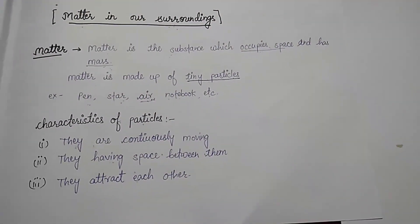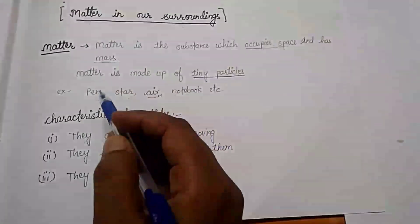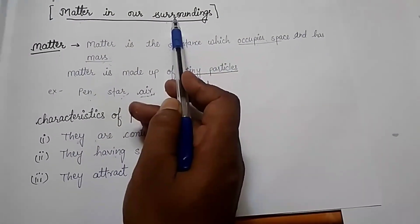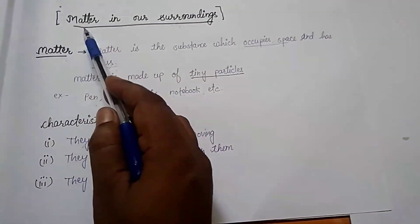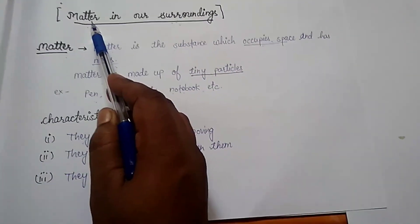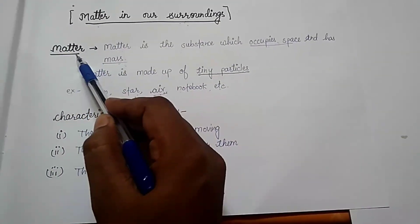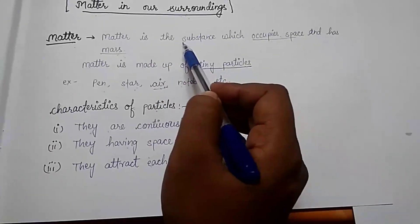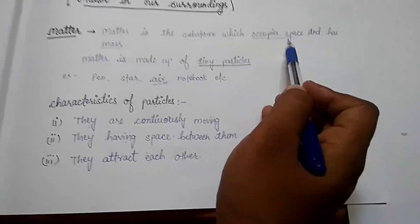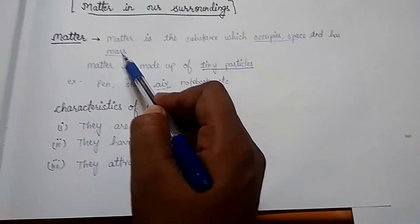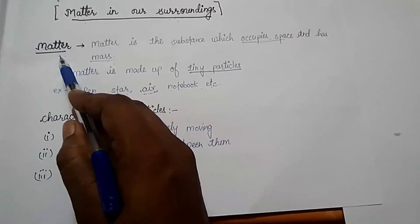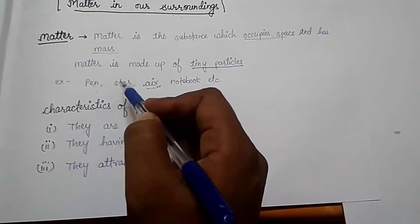Good morning dear students, it's me Vivek Sir. Today we are going to study Class 9 Chapter 1: Matter in Our Surroundings. Our chapter name is matter, so first of all we have to know what is matter and how it is made up of. Matter is the substance — it may be any substance — which occupies space and has mass. Those substances which occupy space and have mass are called matter. For example: pen, star, air, notebook, etc.